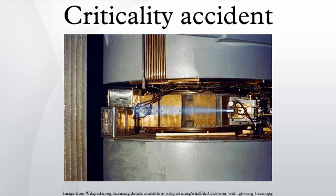In the history of atomic power development, 60 criticality accidents have occurred, including 22 in collections of fissile materials located in process environments outside of a nuclear reactor or critical experiments assembly. Although process accidents occurring outside of reactors are characterized by a large release of radiation, the release is localized and has caused fatal radiation exposure only to persons very near to the event, resulting in 14 fatalities. No criticality accidents have resulted in nuclear explosions.